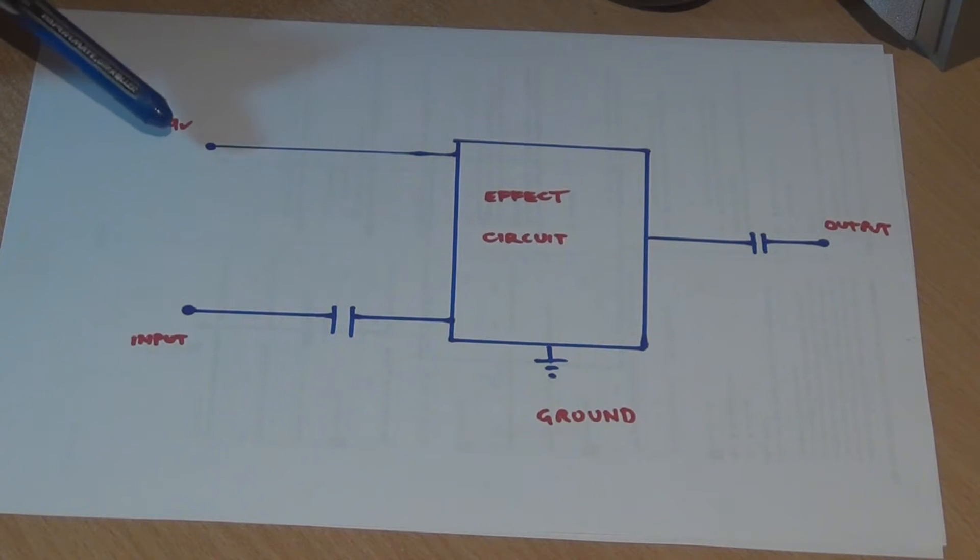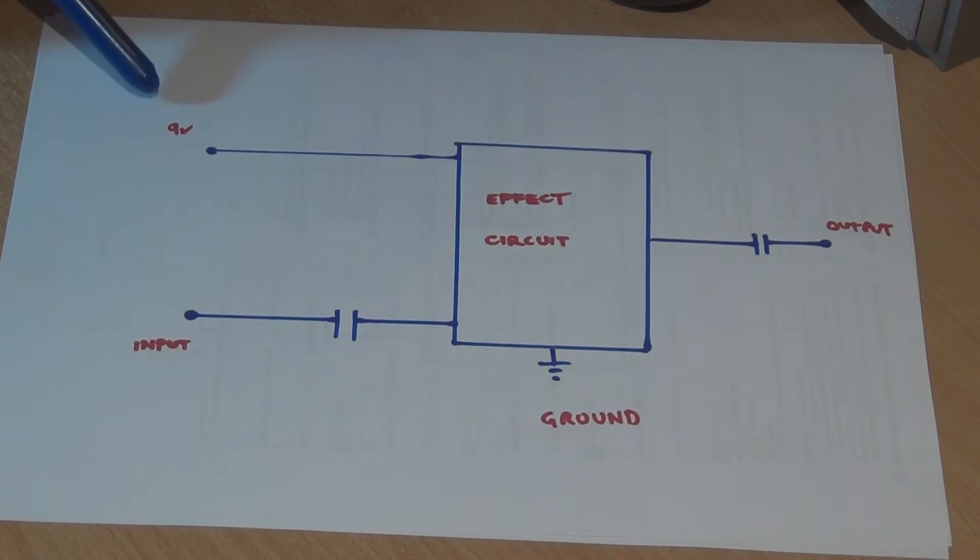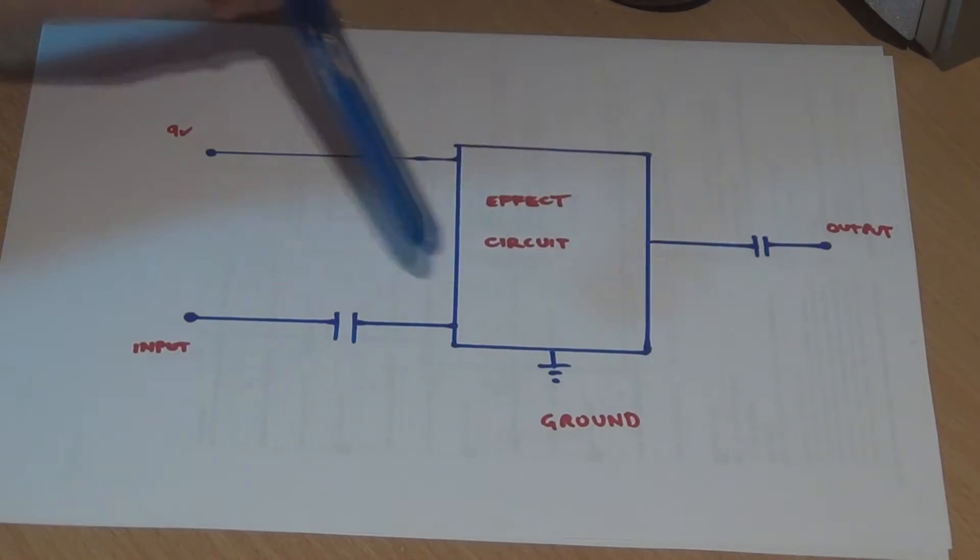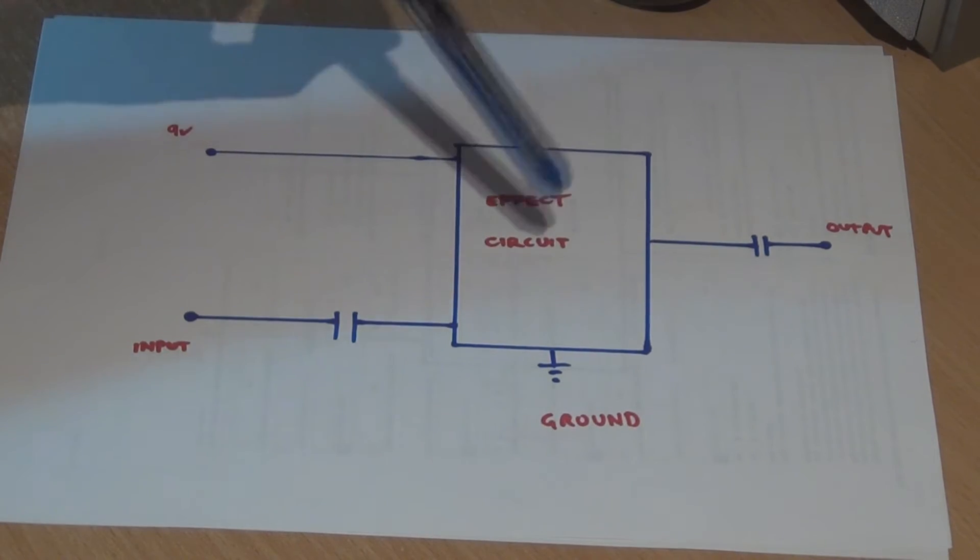So on the diagram here, we've got 9 volts power supply, input, output and ground. And then you've got an effect circuit. And it actually doesn't really matter too much for this example what's actually in the effect circuit.